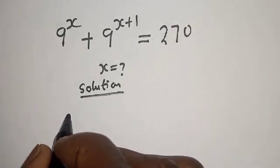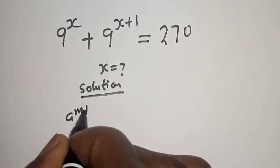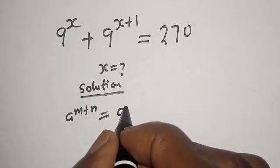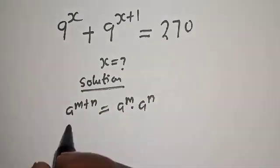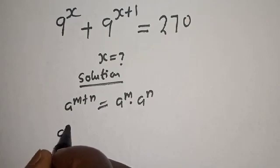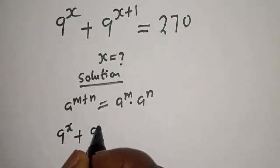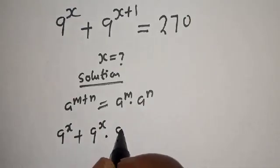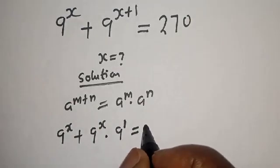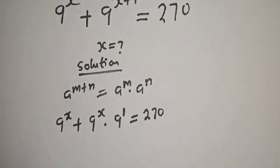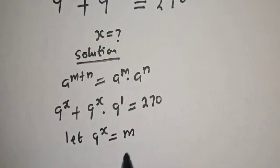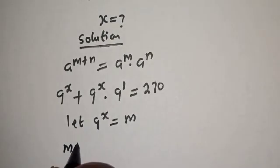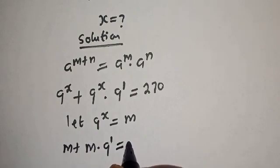Take note of this exponential rule: if you have a raised to power m plus n, this is equal to a raised to power m multiplied by a raised to power n. Then we have 9 raised to power s plus 9 raised to power s multiplied by 9 raised to power 1, equal to 270. Now let 9 raised to power s equal to m, so this becomes m plus m multiplied by 9 raised to power 1 is equal to 270.